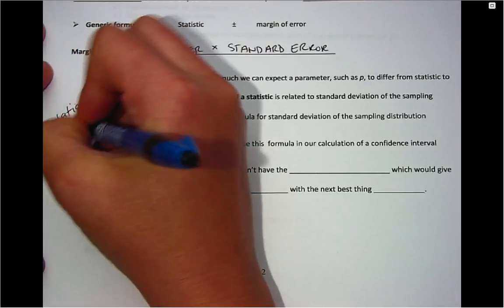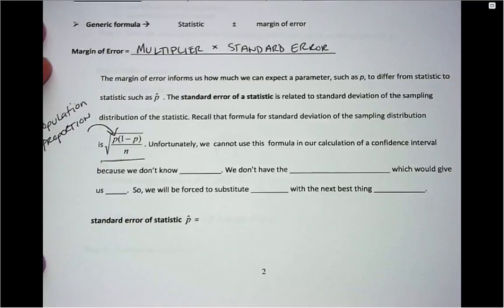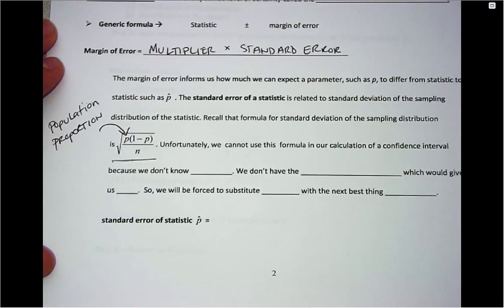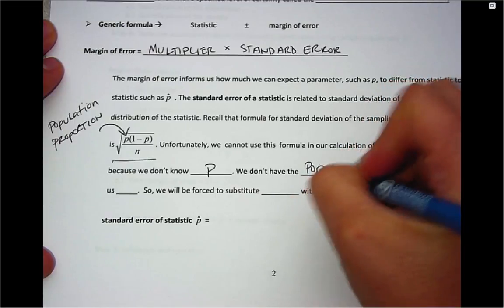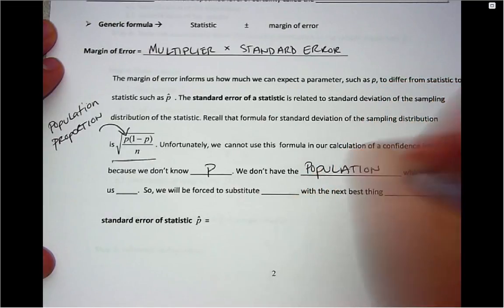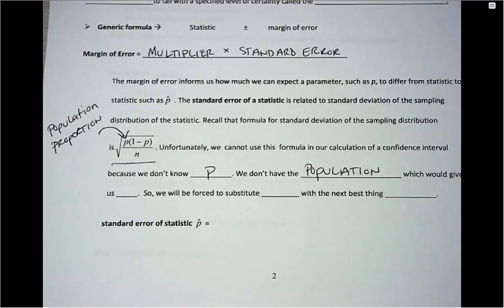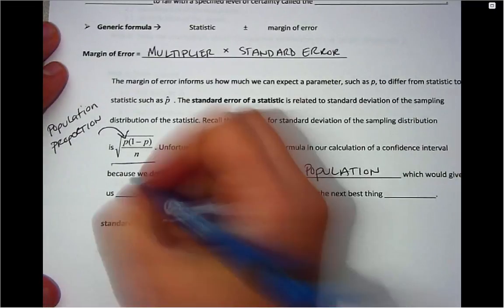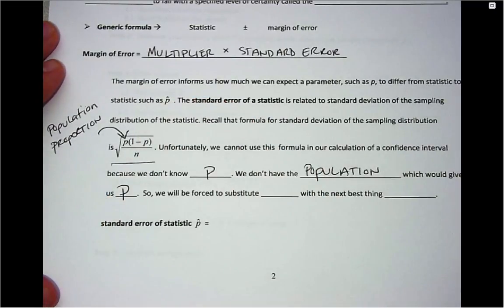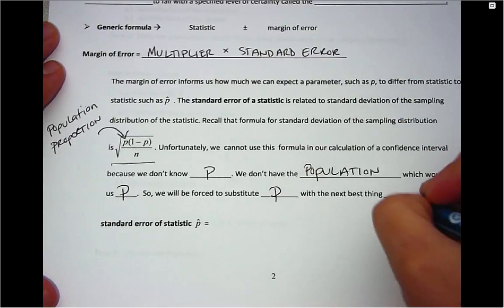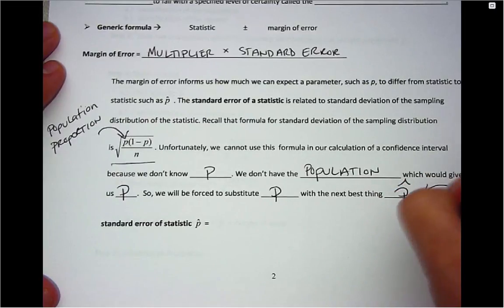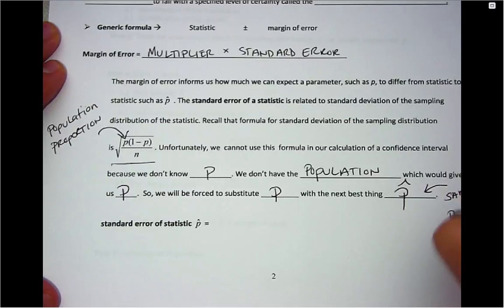When you're making a statistical inference, you actually won't know p, because to know p, we would have to have the entire population. And if you're making an inference, you're using a sample to make a conclusion about a population. So we will have to substitute p with the next best thing, which is p-hat, which is the notation for our sample proportion or our statistic.